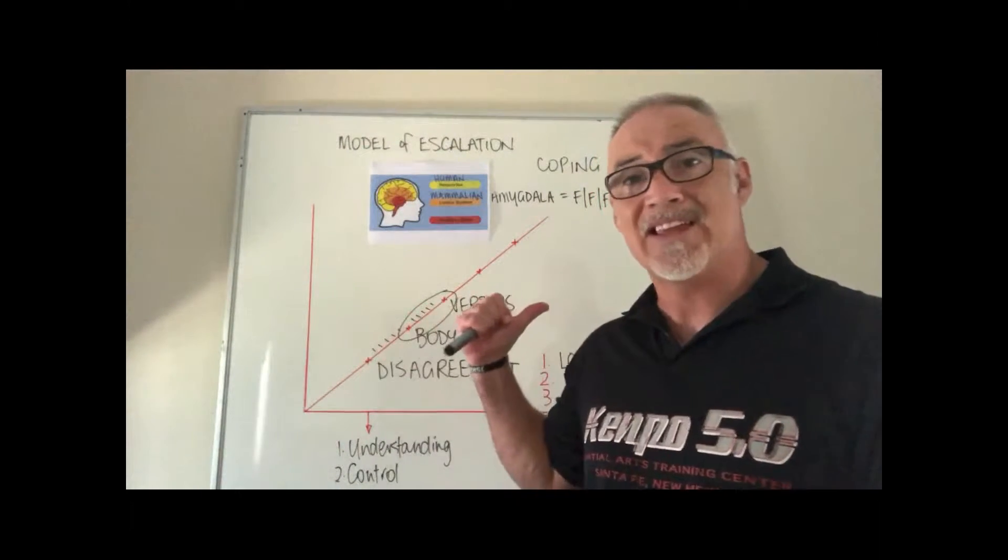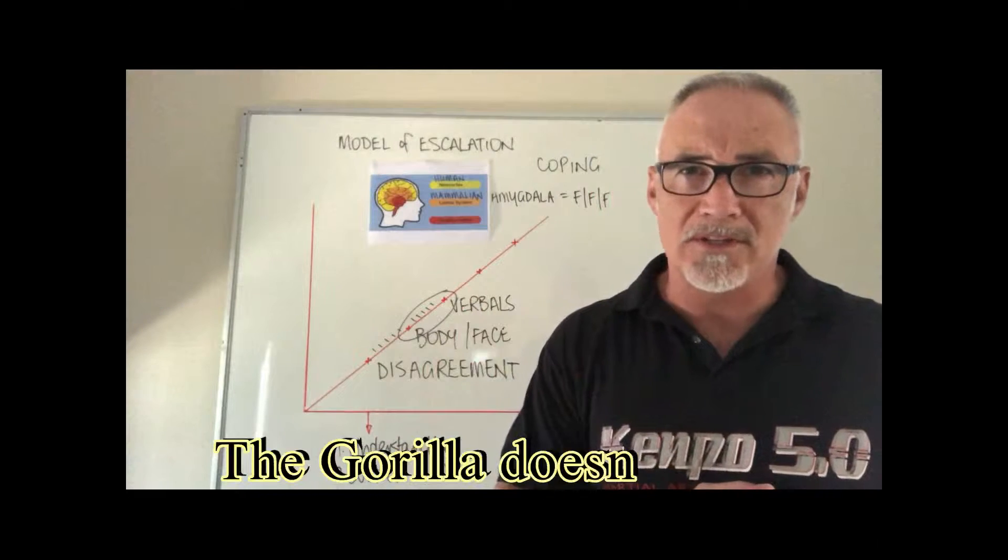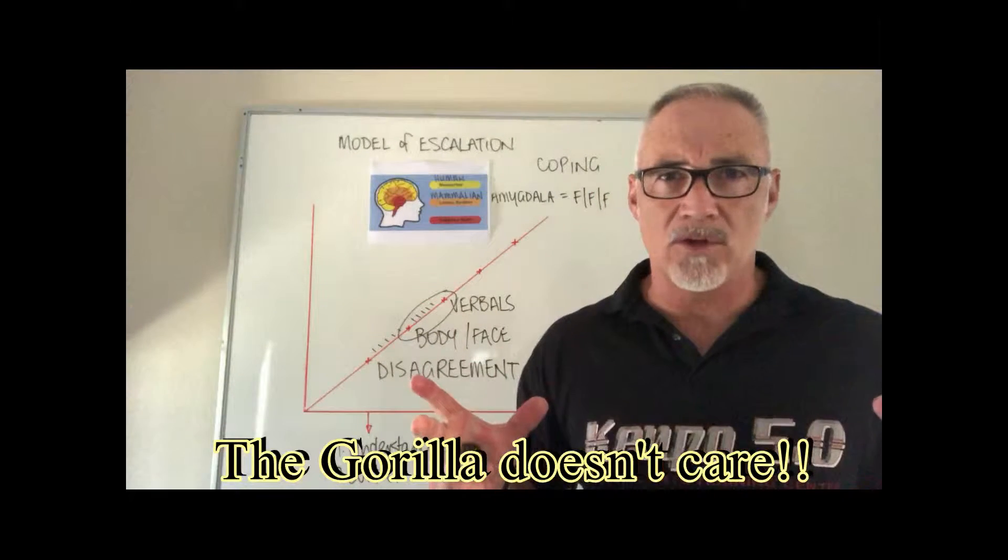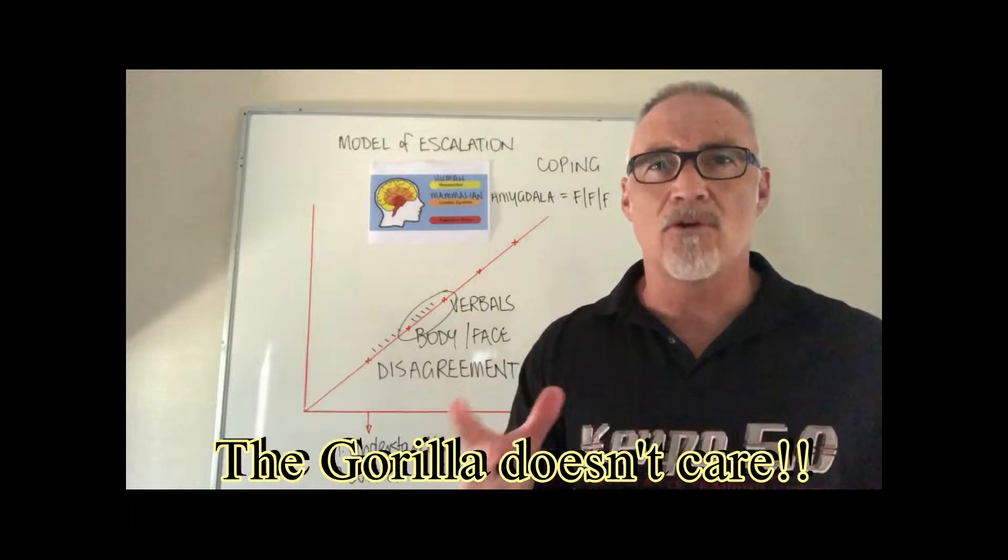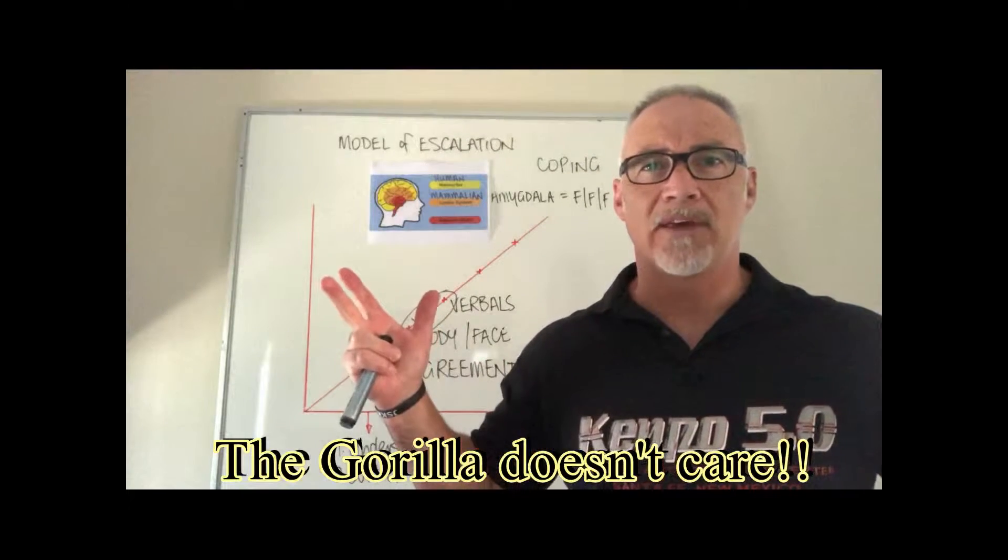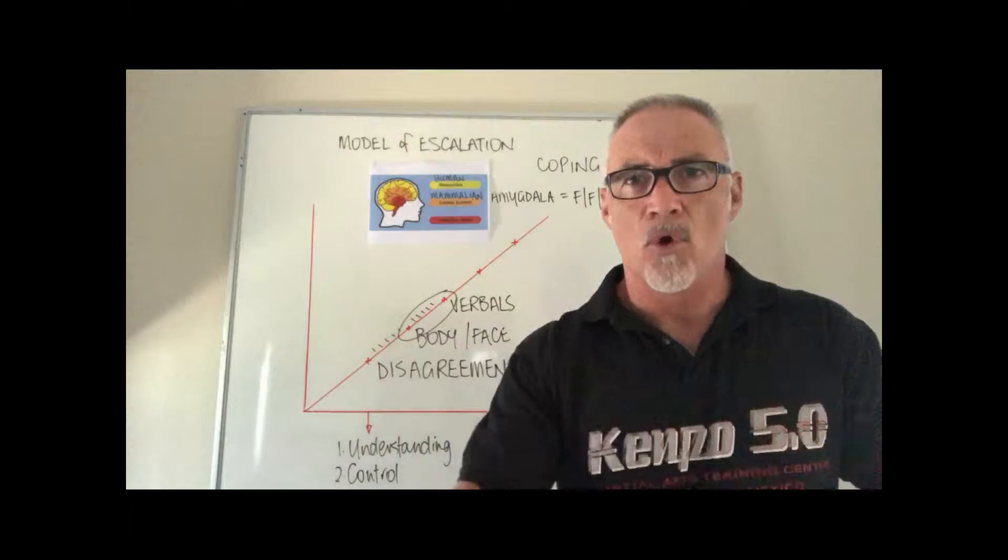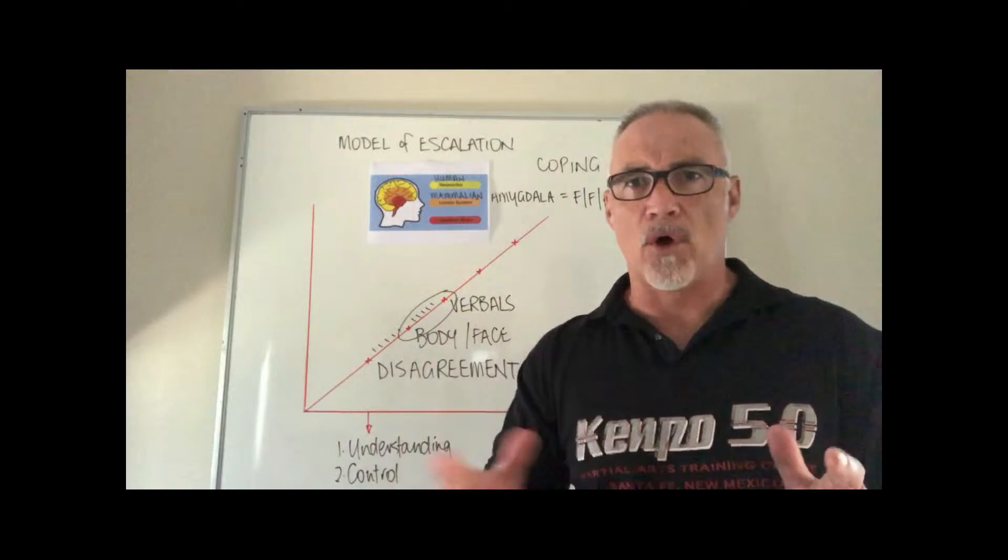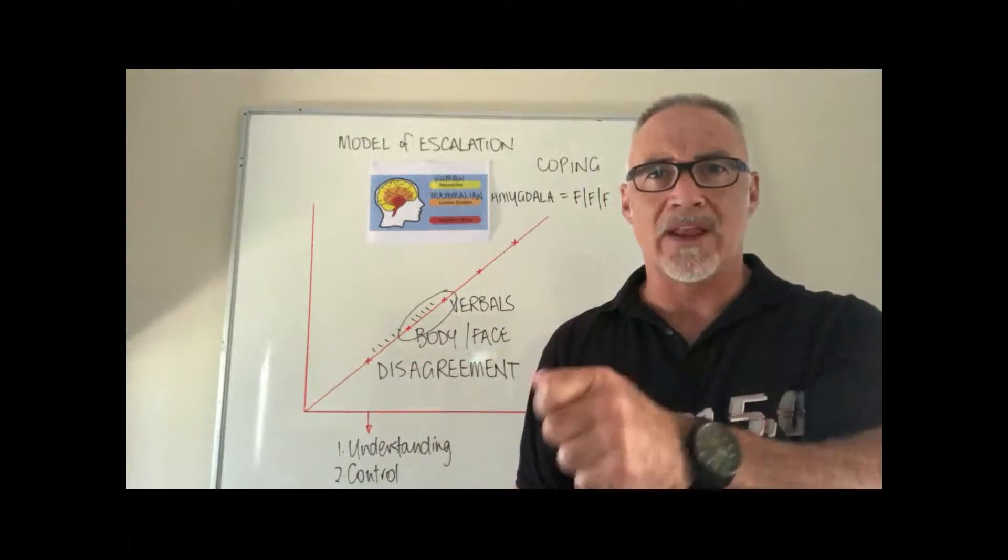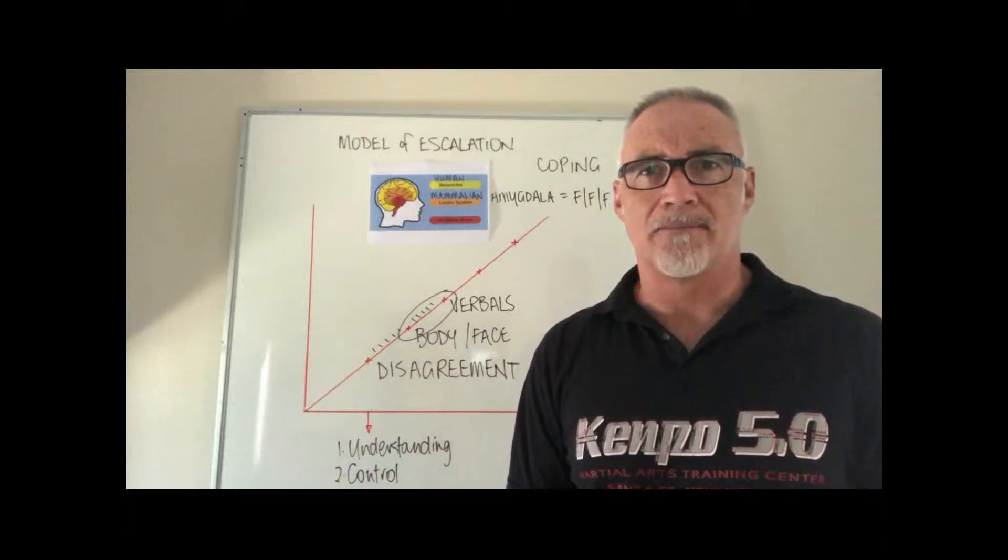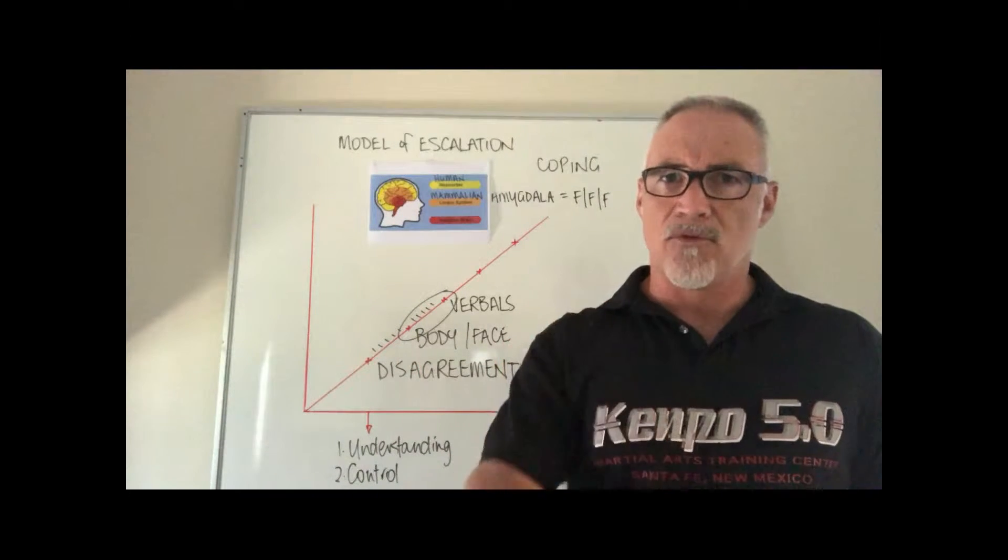The problem with that policy is the gorilla doesn't care about your policies. It doesn't care about your requests. It doesn't care about inappropriate behavior. You are now either a stumbling block or a friend, a friend or foe. You are an ally or an enemy. That's what's going on for the gorilla.